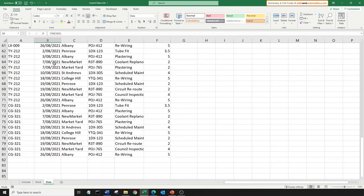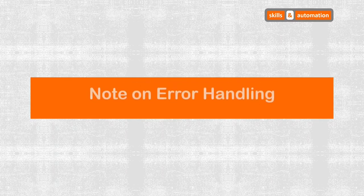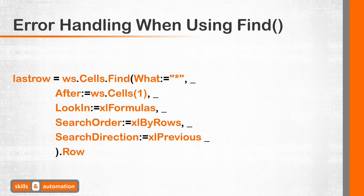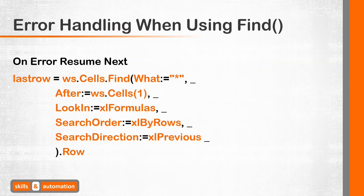Let's wrap this video up with one note on error handling using Find methods. One word of caution: the range.Find method works amazingly if there is a match to be found. But if there is no match found, it would throw an error and you may need to plan for that. What you could do is add an 'on error resume next' statement prior to the range.Find code — this would skip the next line of code if an error is found. Then you could reset the error handler with a 'on error goto 0' statement after the range.Find line. This will not affect the code but could prevent the macro from going bust.